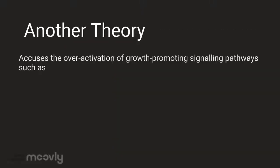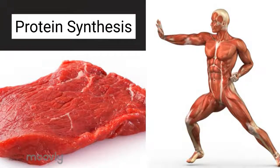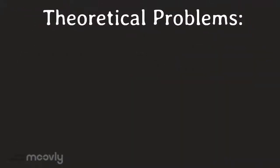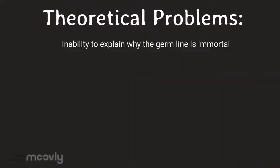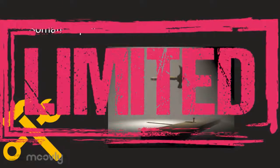Another theory accuses the over-activation of growth from protein signaling pathways such as the TOR or MTOR pathway. The nutrient-sensing MTOR pathway is activated by insulin, growth factors, and nutrients. In turn, it increases protein synthesis, stimulates cell mass growth, and inhibits autophagy. Some theoretical problems with the ROS model are its inability to explain why the germline is immortal while the soma is mortal, and why free radicals don't damage the germline. It was theorized that somatic repair is limited by energetic resources allocated for growth and reproduction.